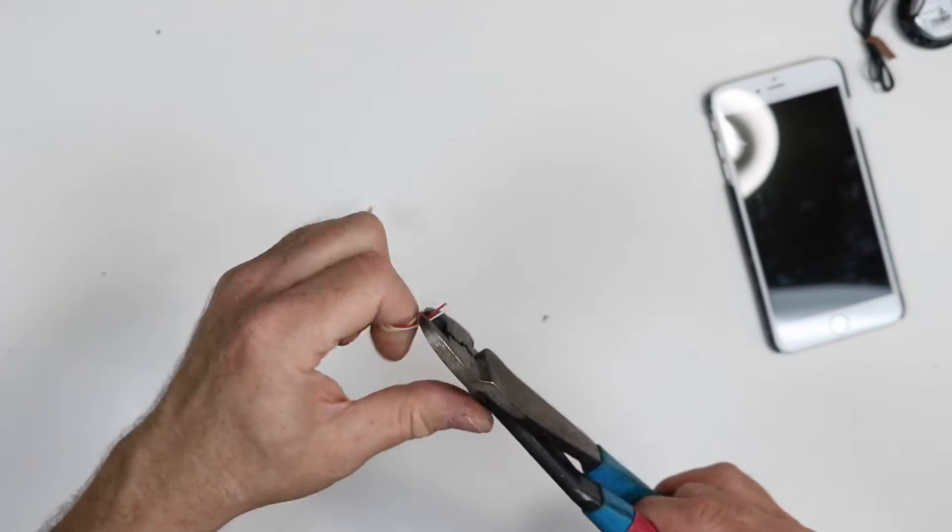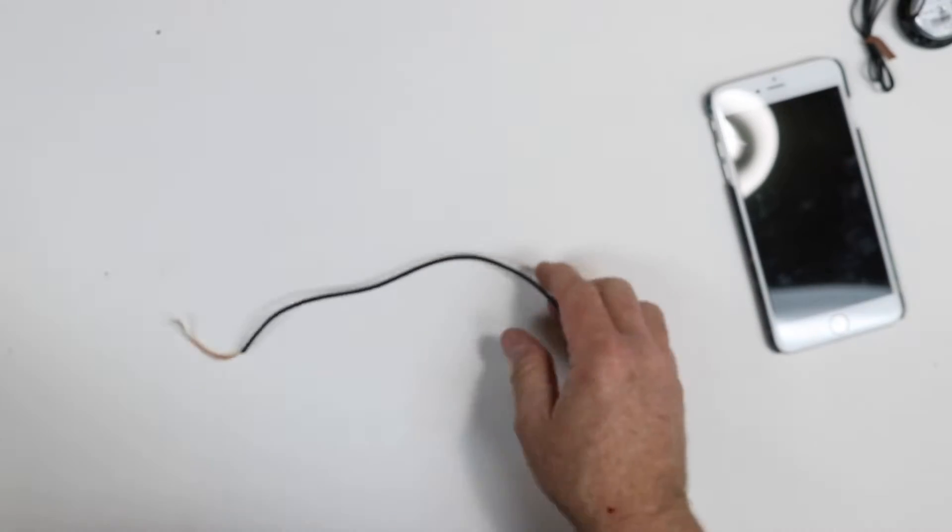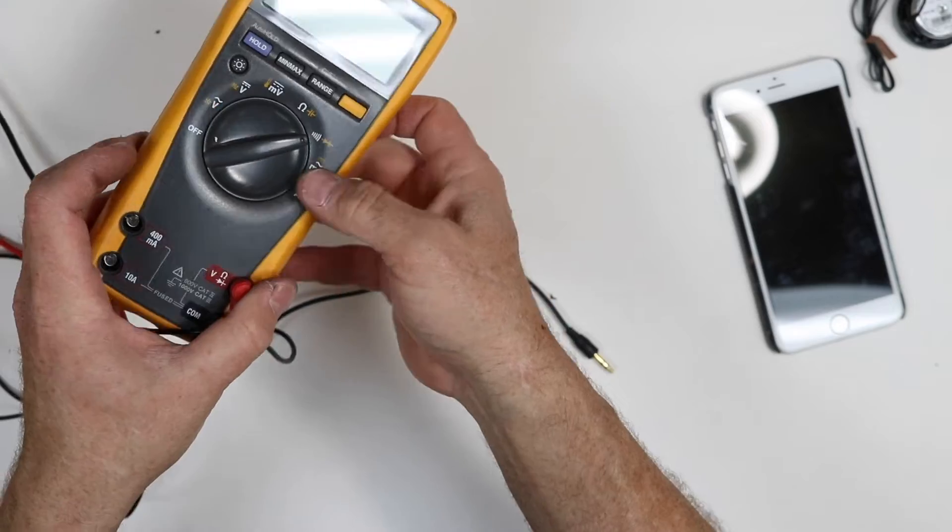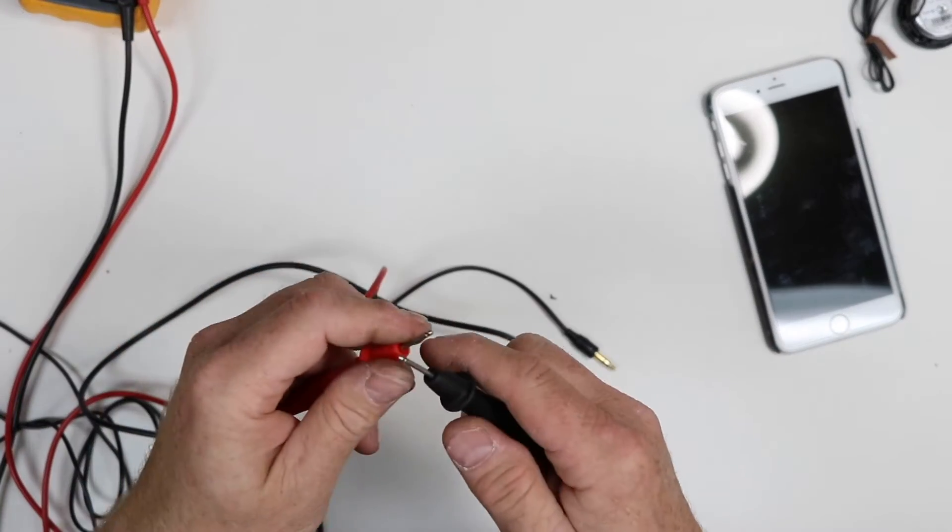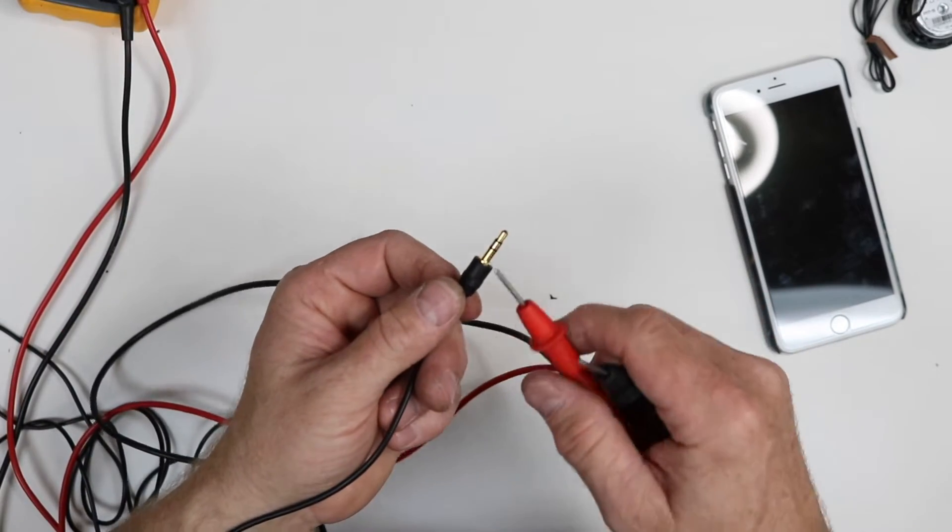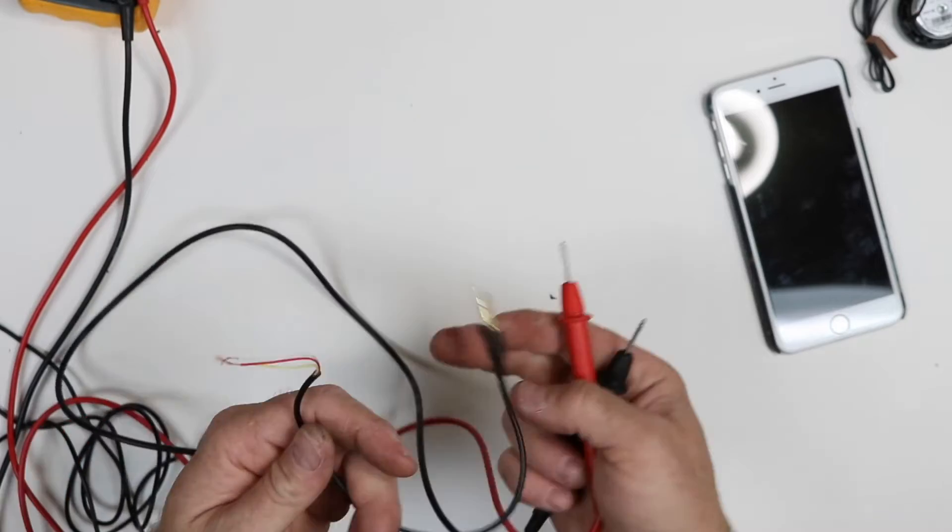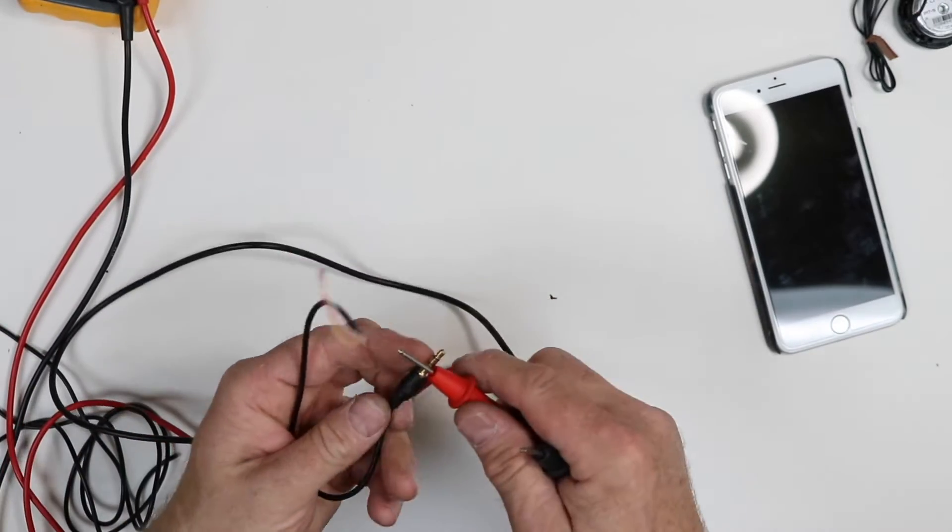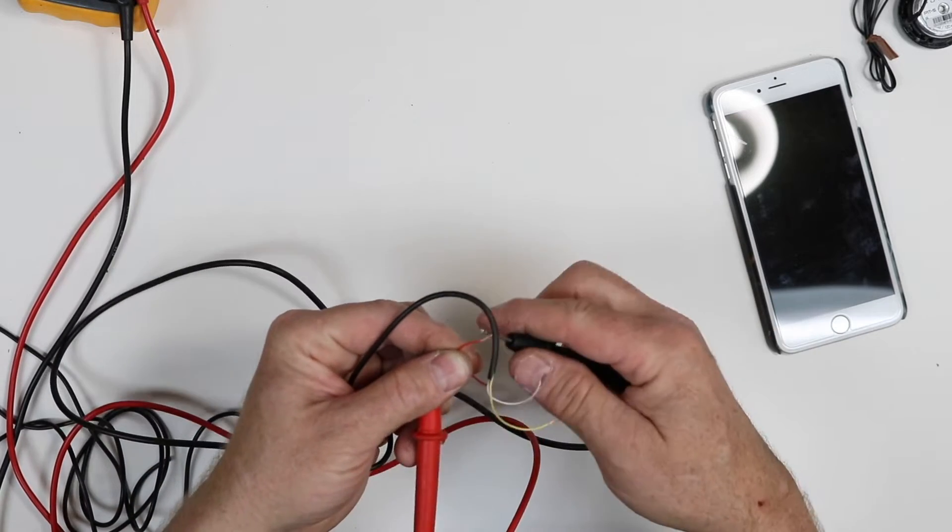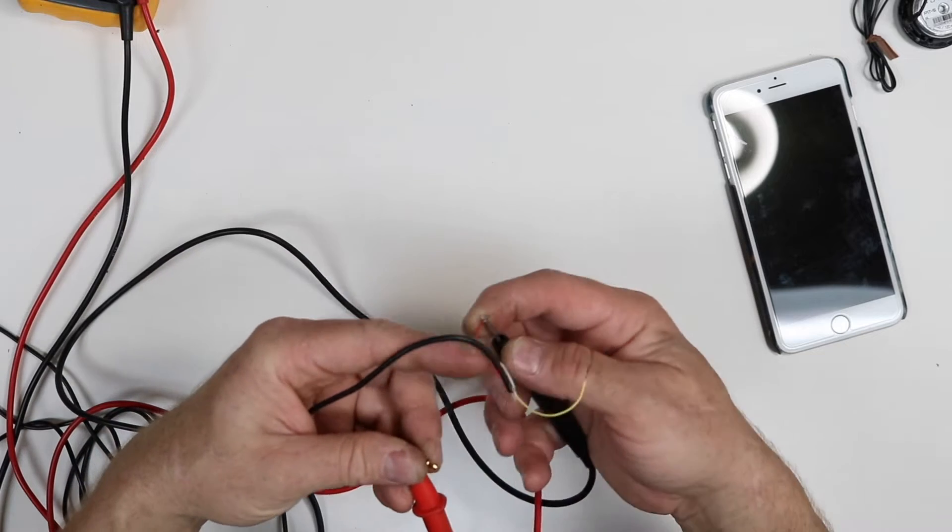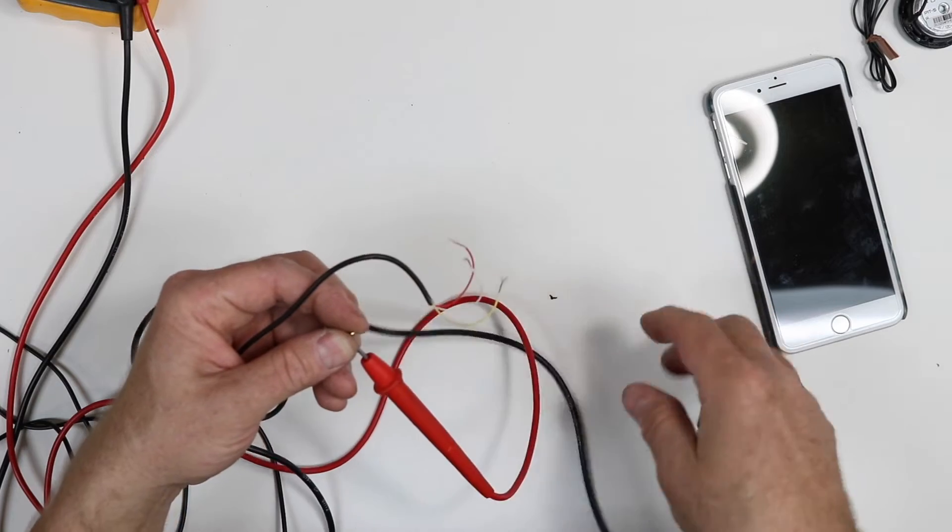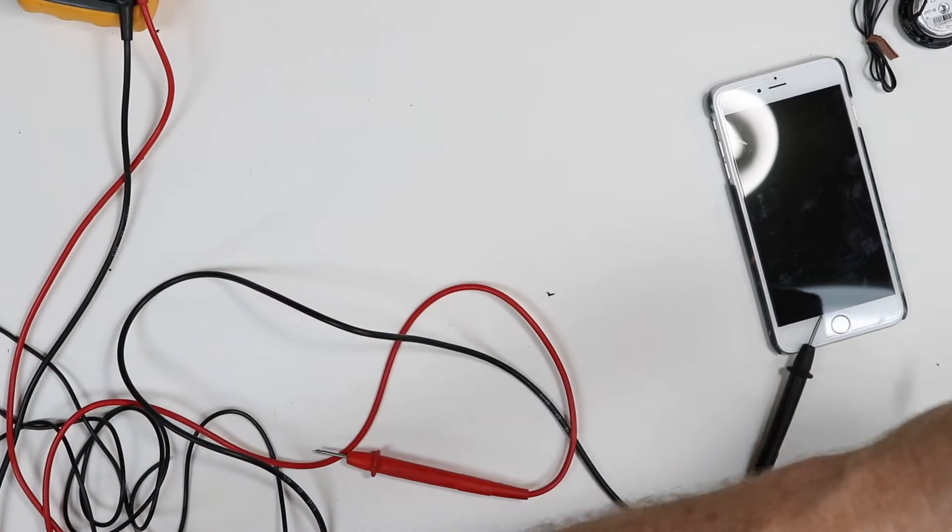All right, so now go ahead and strip the tips back on all the wire and then grab yourself a digital multimeter. Go ahead and set it to the cool radiating lines, which is a continuity test. You want it to do this. And what we're looking for is the bottom and the top.